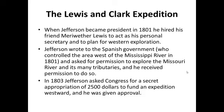Jefferson was no friend to Native Americans and felt they were simply in the way, a view shared by many of the founding fathers. Even before the Louisiana Purchase, Jefferson wrote to the Spanish government, who controlled the area west of the Mississippi River in 1801, asking permission to explore the Missouri River and its tributaries — and received that permission. In 1803, he asked Congress for a secret appropriation of $2,500 to fund an expedition westward, and was given approval. The expedition was not public knowledge until after their return.